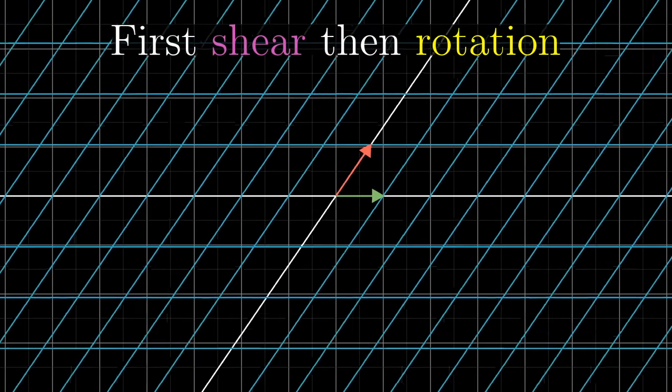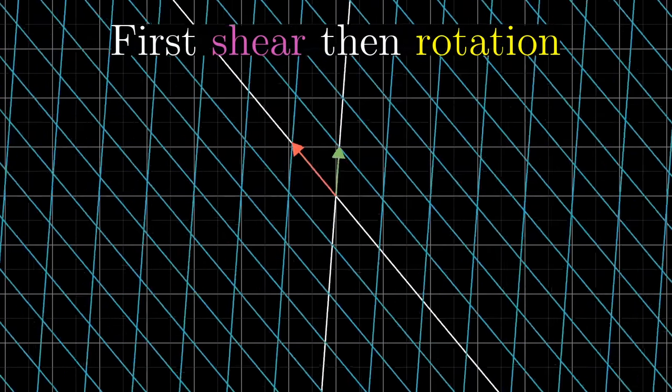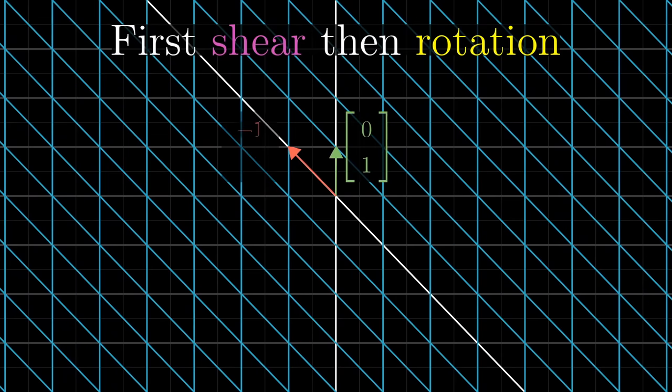If you first do the shear, then rotate, we can see that i hat ends up at 0,1, and j hat ends up at negative 1,1, both are generally pointing close together.